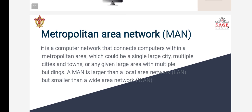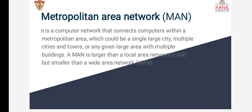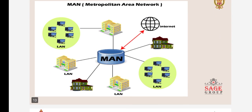The second one is Metropolitan Area Network (MAN). It is a computer network that connects computers within a metropolitan area — meaning we can connect a network in a large city, multiple cities, a town, or any area bigger than a LAN. MAN is larger than a Local Area Network. This is the diagram for MAN, in which we can see multiple types of LAN connected to a MAN. MAN can connect multiple LAN networks to the internet.